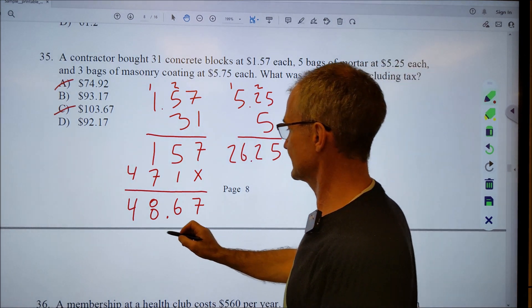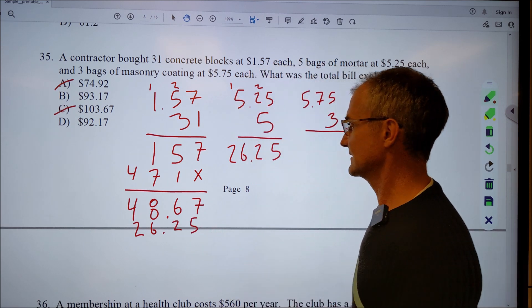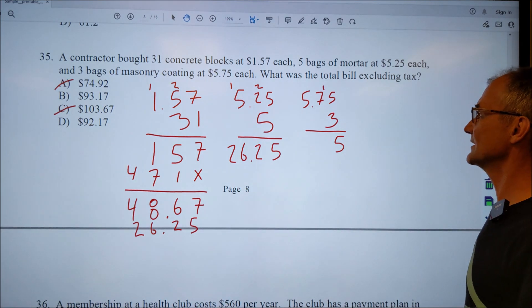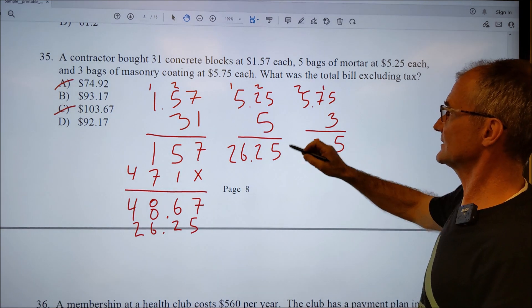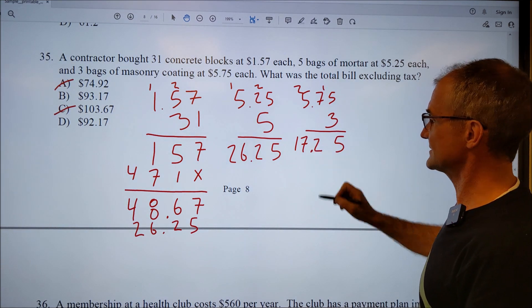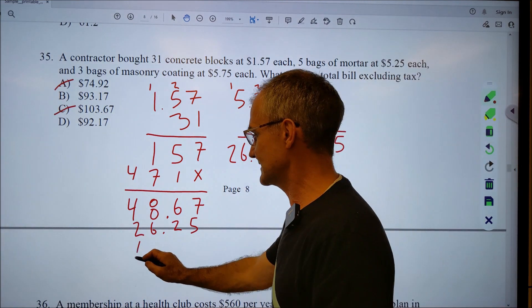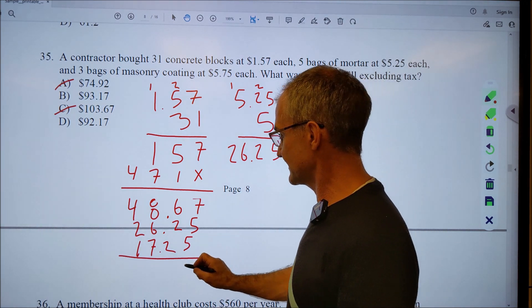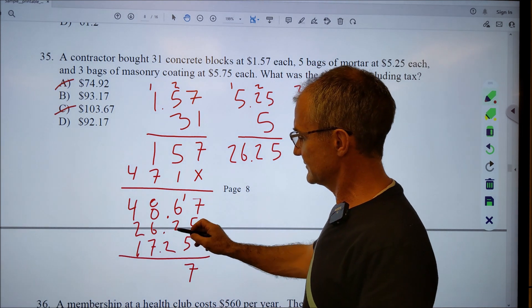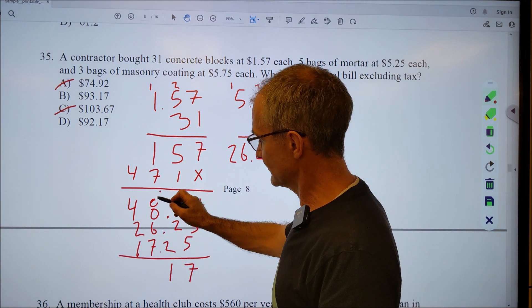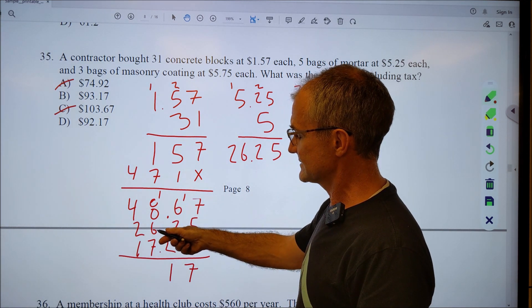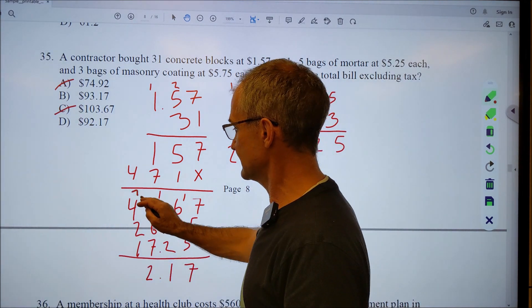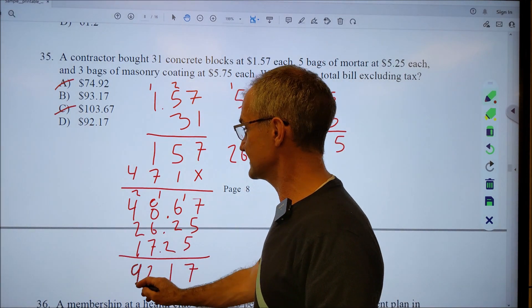And then over here, I'll multiply three. That's five, fifteen. Twenty-one plus a one, twenty-two. Carry the two. Fifteen and two, seventeen. Again, two decimal places, seventeen, twenty-five. So I'll put that down here. Now I'm going to add these three numbers up. Seven plus five plus five. There's a ten plus seven, seventeen. Carry the one. Two, four, ten, eleven. Carry the one. Eight and one is nine. Plus six is fifteen. Plus seven is two, twenty-two. Carry the two. Two, six, eight, nine. And I have ninety-two, seventeen. Answer D.